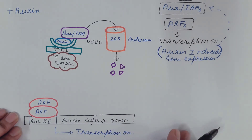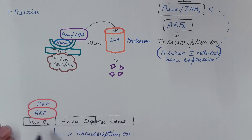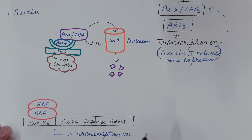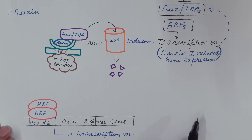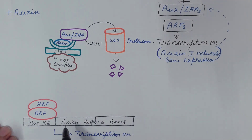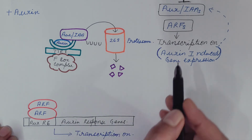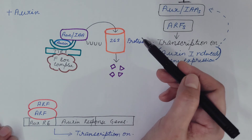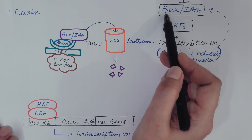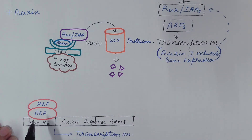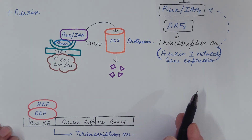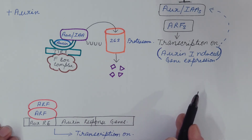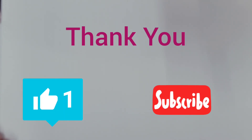We say that transcription is on — there is auxin-induced gene expression. But if this is not regulated, transcription goes on and on, resulting in the wastage of materials and energy. So there must be a regulatory system. Among the auxin response genes, there are certain genes that encode for AUX/IAA, which is the inhibitor of the transcription factor ARF. When it is encoded, this inhibitor comes and binds with the transcription factor and suppresses its activity — creating a negative feedback regulatory system.